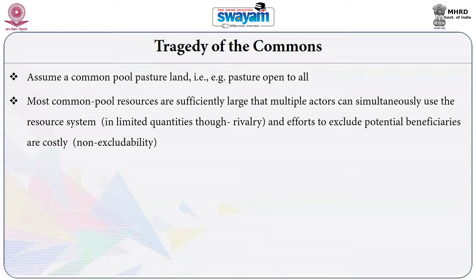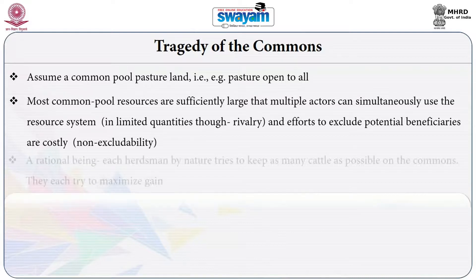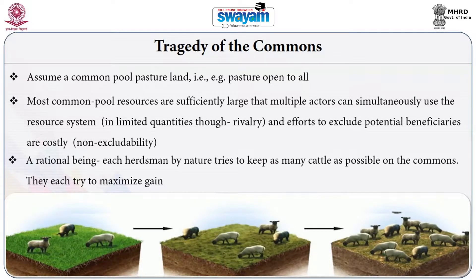Another characteristic associated with this common pool resource is that the effort to exclude potential beneficiaries is also costly — this characteristic is termed non-excludability. So a rational herdsman, given multiple herdsmen who have animals to graze on that specific resource, will try to keep as many cattle as possible on the commons.